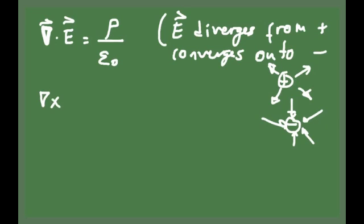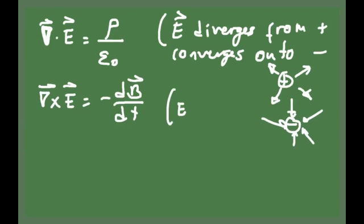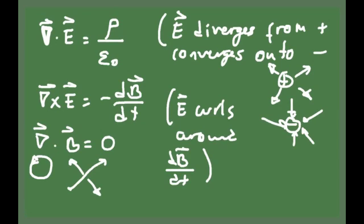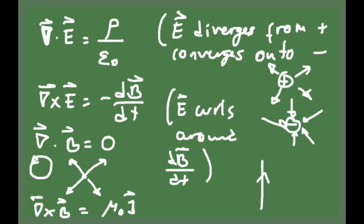Another equation that was known at the time was that the electric field curls around changing magnetic field lines. The third equation tells you that there are no magnetic monopoles — that is, the magnetic field lines always curl around and are never originated at one point; the magnetic field does not diverge or converge onto any point in space. And Ampere's law tells you that the magnetic field curls around currents. If you have a current in space — j is current density — that current generates a magnetic field. These were the equations as known at the time of Maxwell.